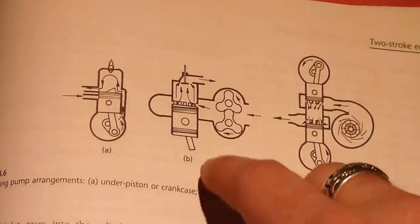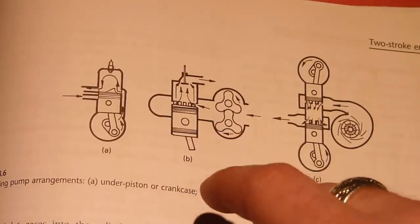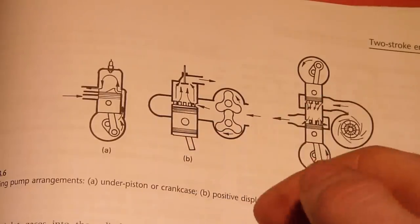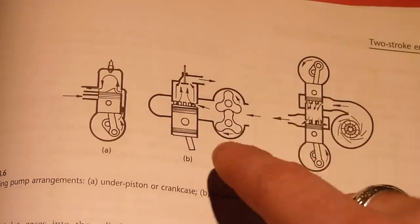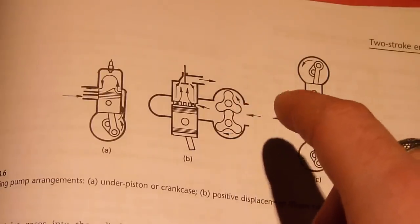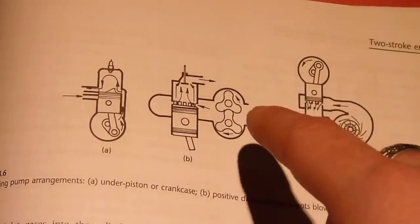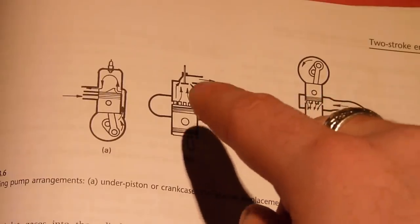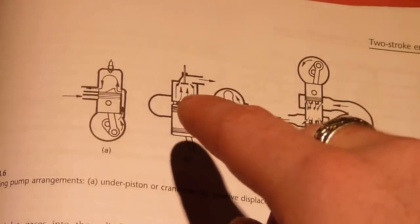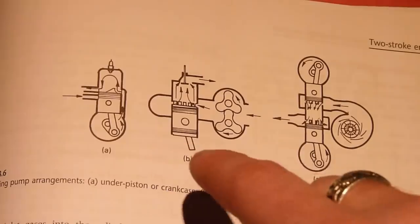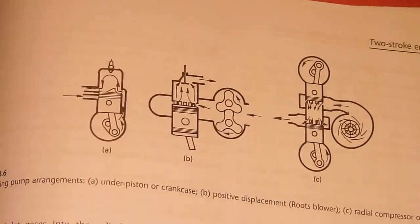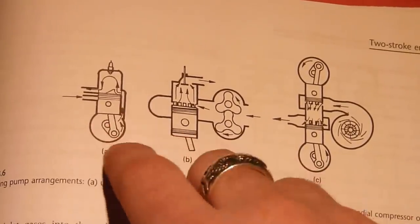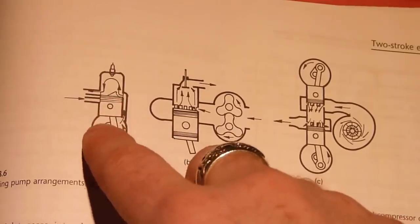But the reason why this is done is because they don't use the crankcase itself as the compressor, so they actually do need an external method of increasing the scavenging pressure to force the fuel-air mixture into the cylinder and push the exhaust gases out. In a traditional crankcase induction system, it uses the crankcase as the compressor and the piston.